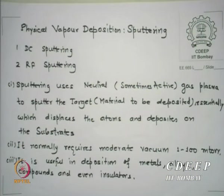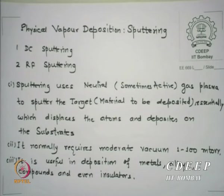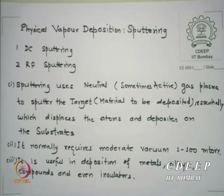That word will come soon and you will know where implant starts and where sputtering ends. There are also energetic ions in both cases. The difference is that in implantation the acceleration is very high — the column is so long and we accelerate to 300 keV. Here in sputtering we will not use those kinds of energies. Sputtering uses neutral gas plasma to sputter target material to be deposited — essentially it displaces the atom and deposits on the substrate.